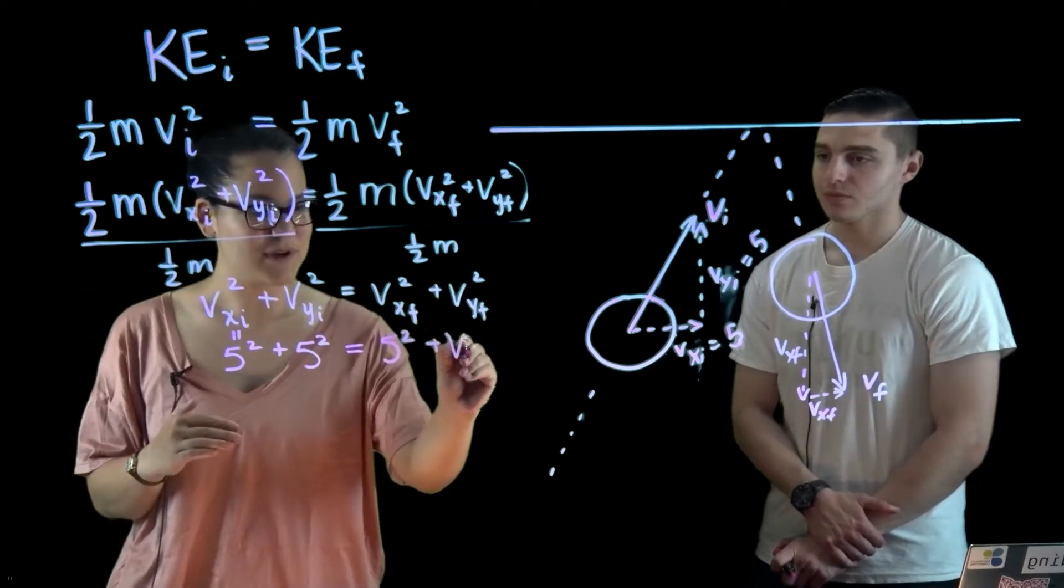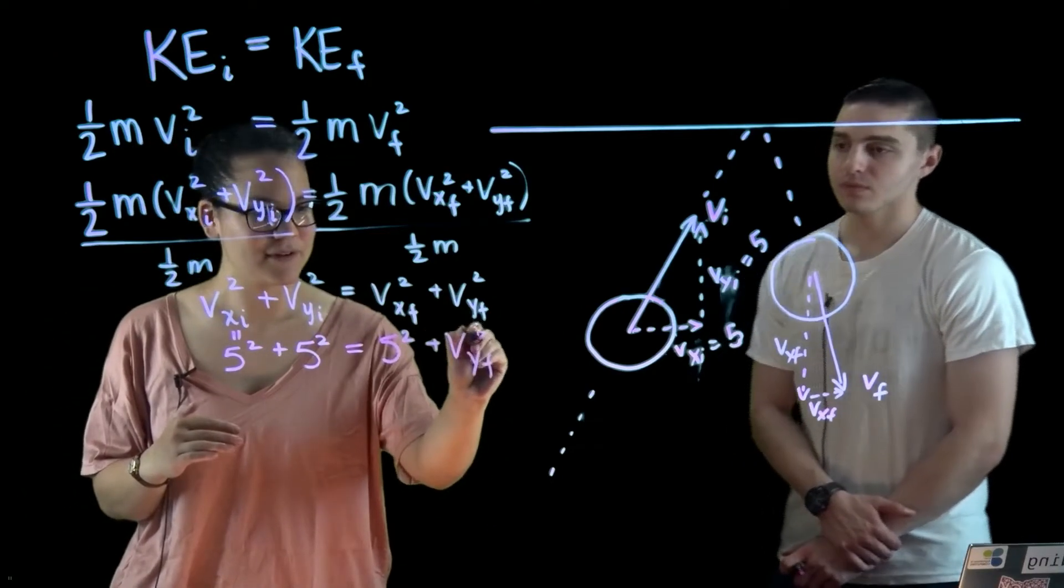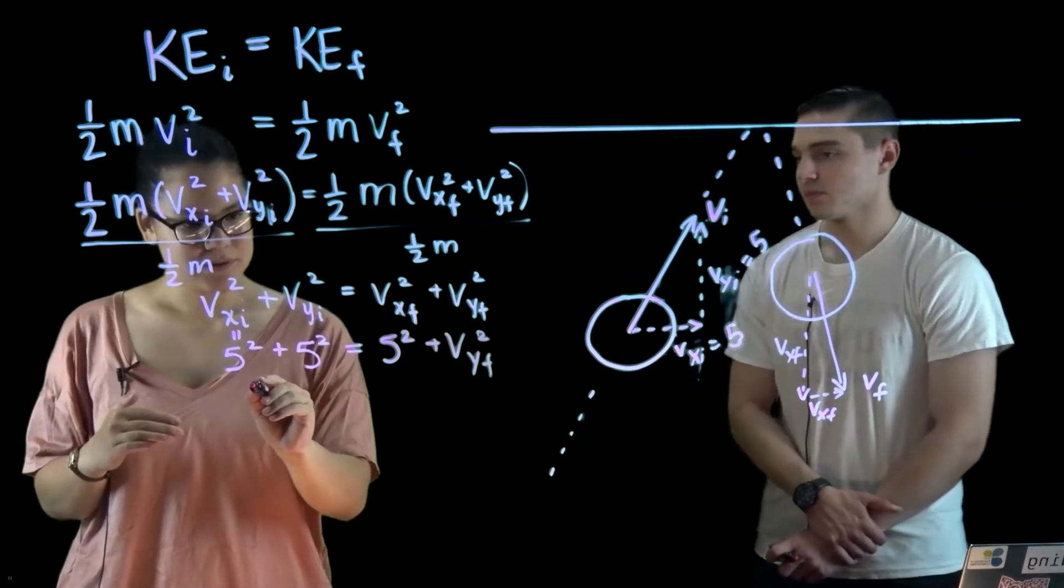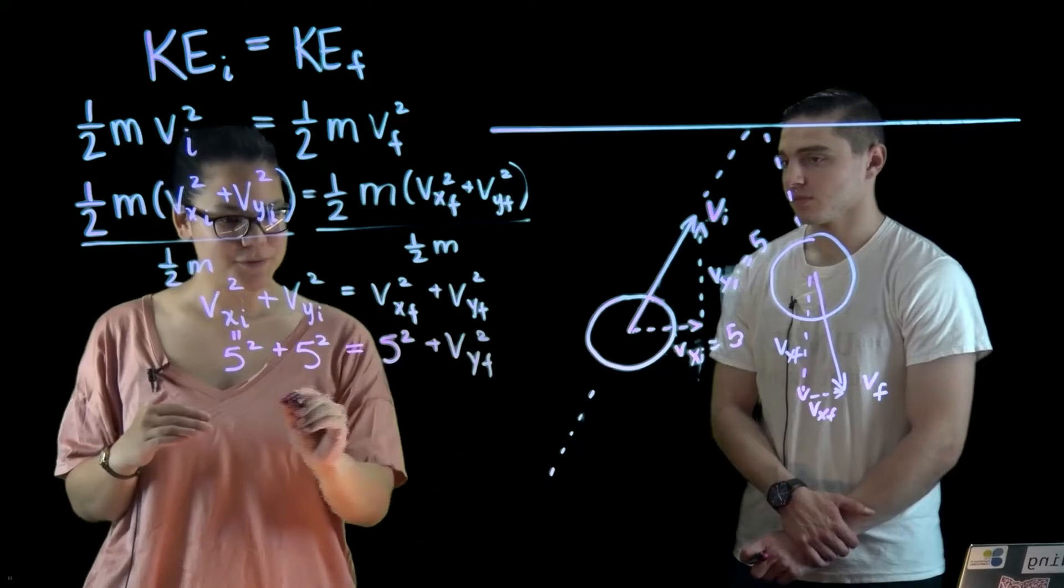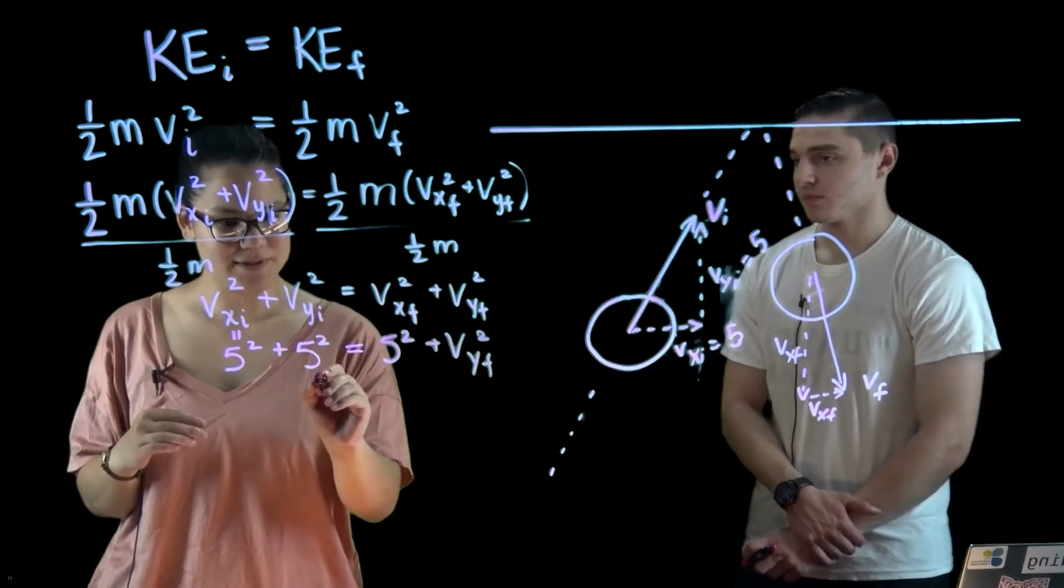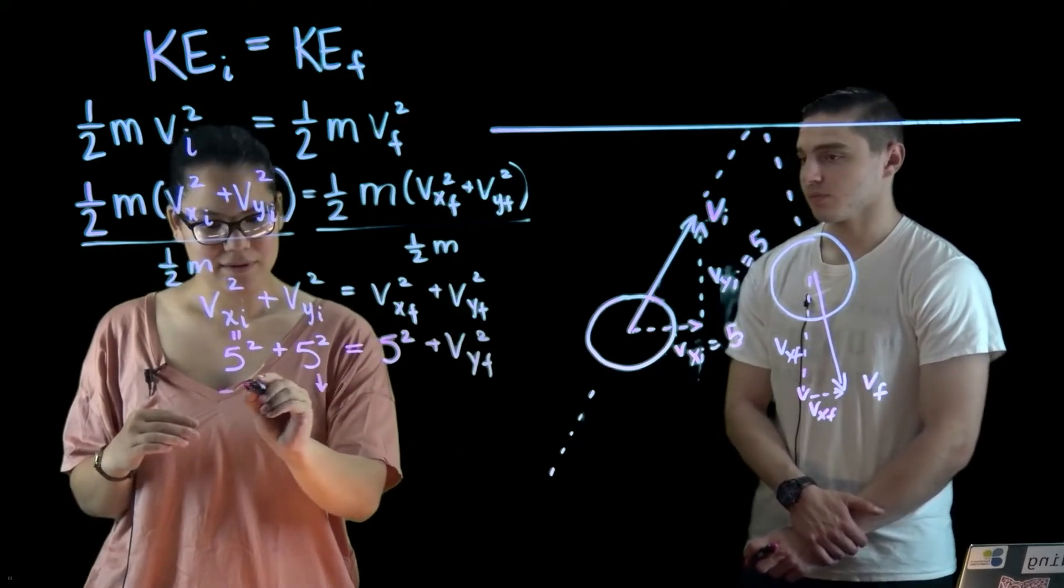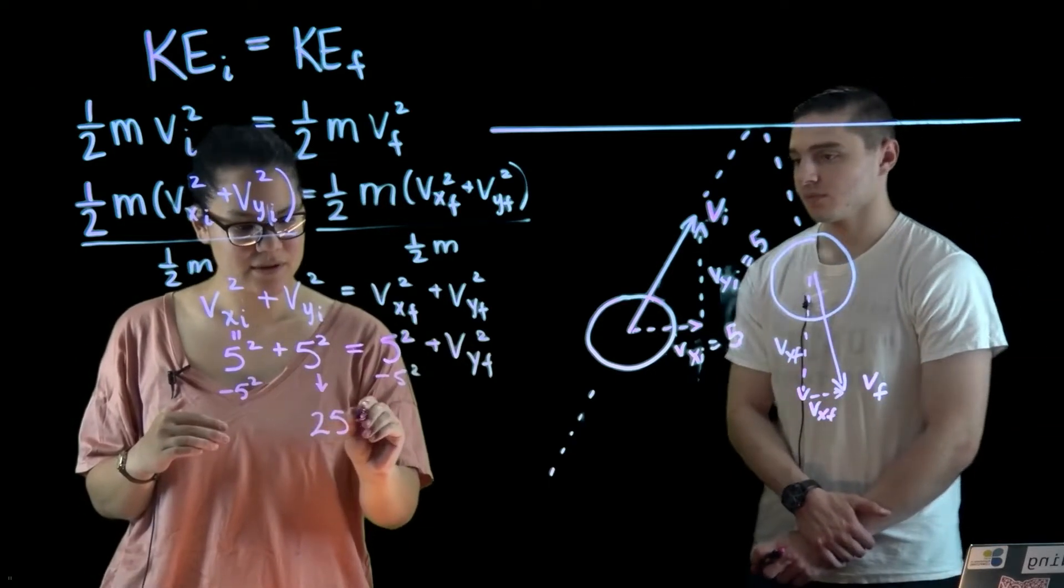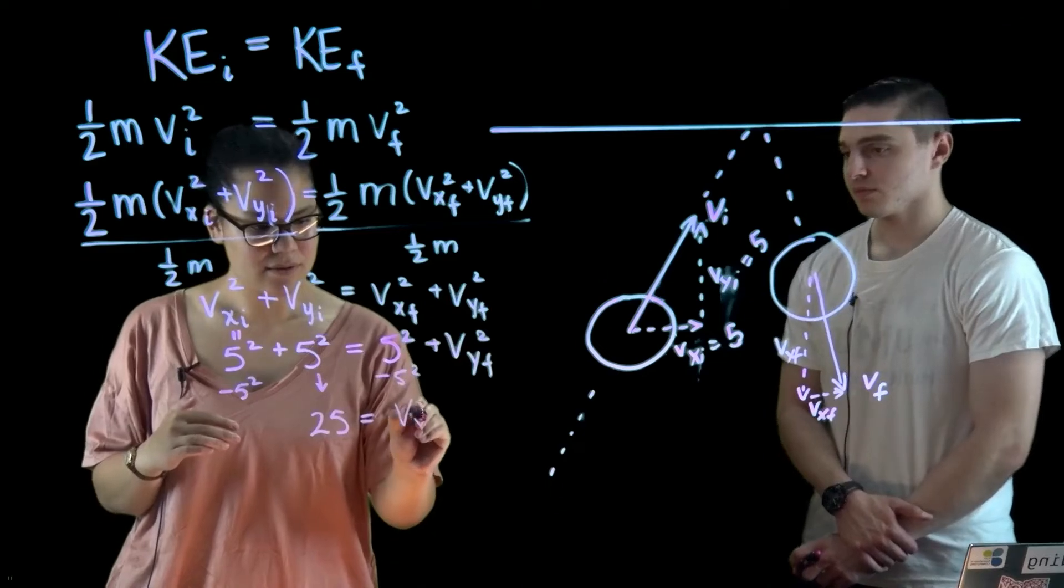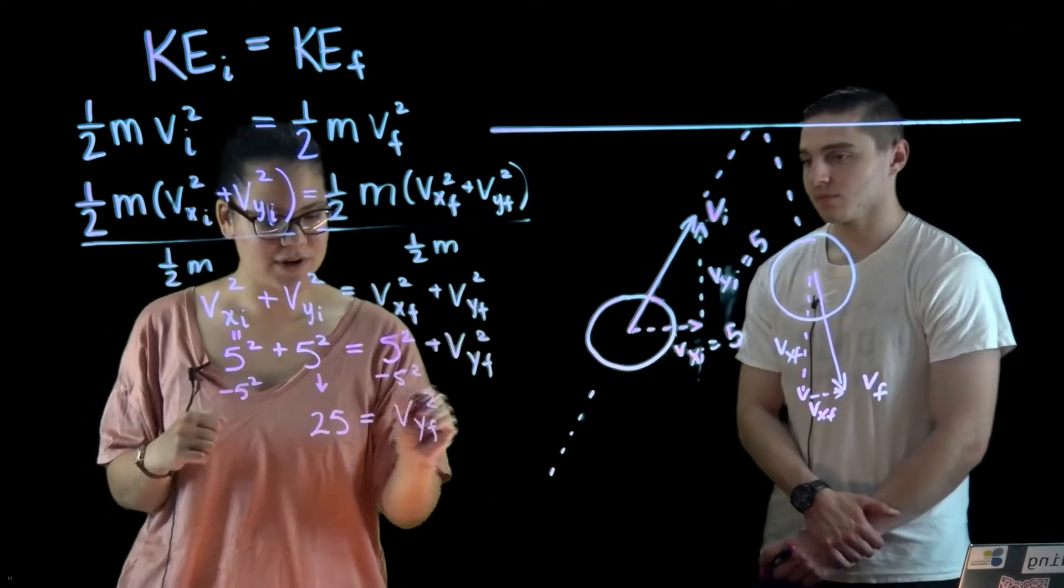And we're left with not knowing VYF. So we have 5 squared here or 5 squared here. I'll write this out as 25. That's equal to VYF squared.